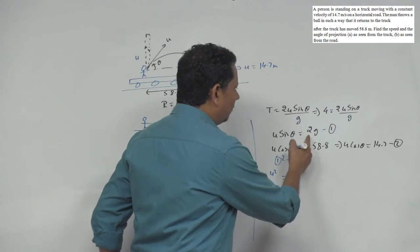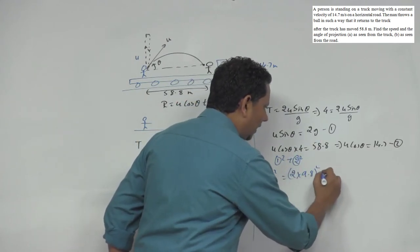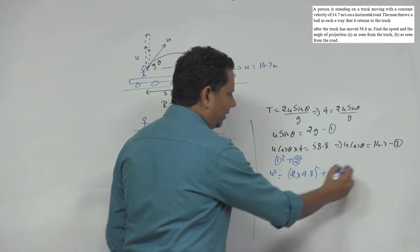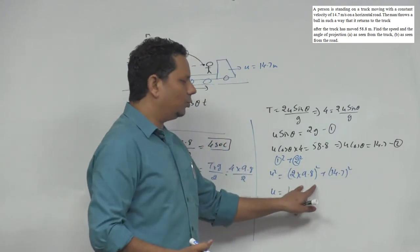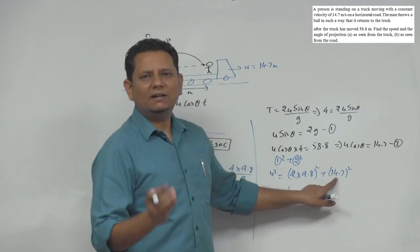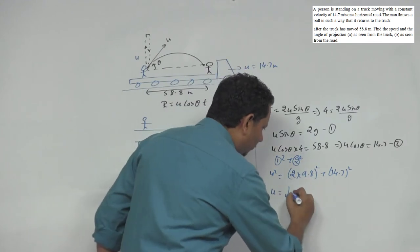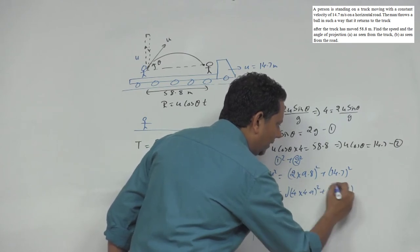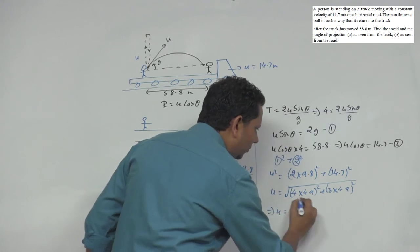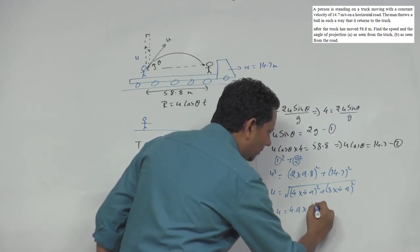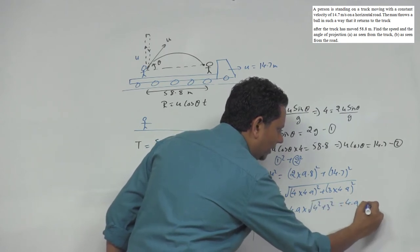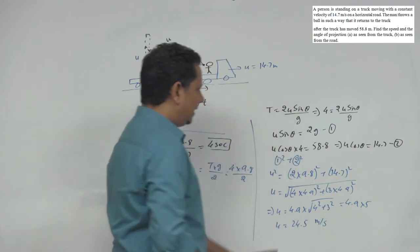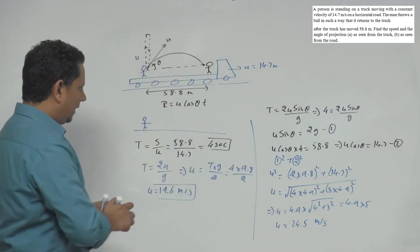Taking u sin theta squared plus u cos theta squared, u squared equals 19.6 squared plus 14.7 squared. Now 14.7 is a multiple of 4.9, so this equals 4 multiplied by 4.9 squared plus 3 multiplied by 4.9 squared. Taking 4.9 common, under the root we get 4 squared plus 3 squared, which gives u equal to 4.9 multiplied by 5, so u equals 24.5 meters per second.